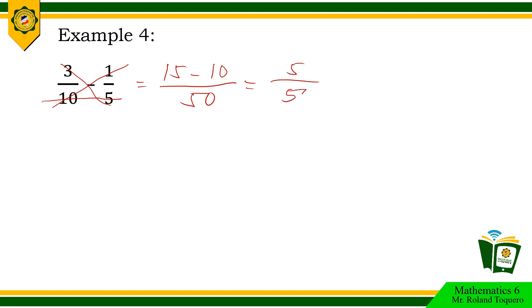The answer is 5 over 50. This is not yet in the lowest term. 5 and 50 are both divisible by 5. The final answer in the lowest term is 1 over 10.